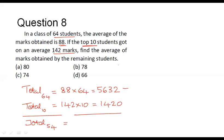That corresponds to 5632 minus 1420, and that value comes to 4212. You are asked to find the average marks obtained by these remaining 54 students, so what will be that average value? That will be 4212 divided by 54.